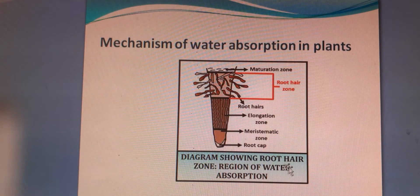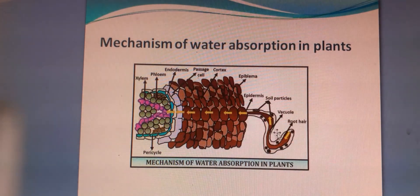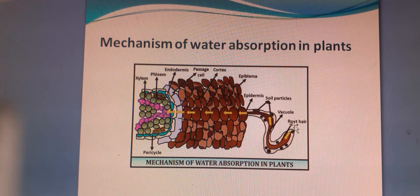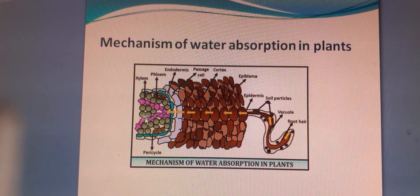Here is the diagram showing the root hair zone — the region of water absorption. This is the root hair zone where water absorption occurs. Here is the process of absorption of water by root cells through osmosis. Water is absorbed in the root hair, flows into the xylem tissue, and from the xylem tissue water goes to the top of the plant, reaching the leaf.